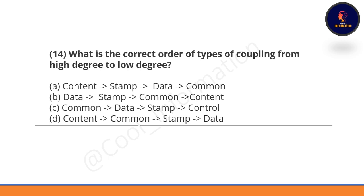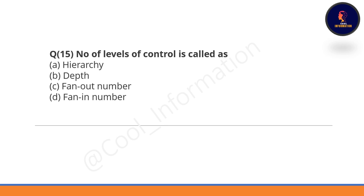Question 14: What is the correct order of types of coupling from high degree to low degree? Option A is correct: content, then stamp, data, and then common. Question 15: The number of levels of a control flow is called what? The number of levels of control is called depth — Option B is correct.